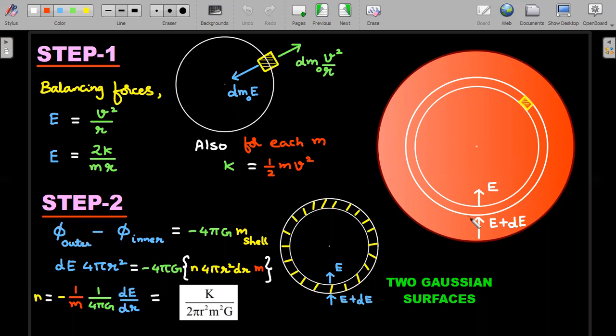Coming to Step 2, we'll try to calculate the required value of number density function using Gauss's law. I'll take two Gaussian surfaces: one at distance r and one at distance r + dr. There will be a lot of those gaseous dm₀'s inside this shell of volume 4πr²dr. If I were to write Gauss's law twice, one for the outer surface and one for the inner surface, I'd get two fluxes.